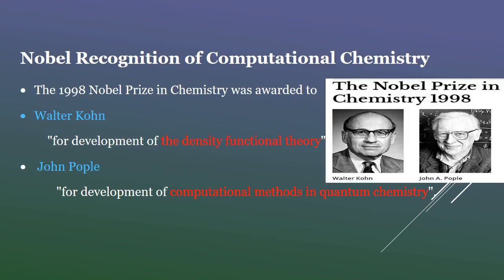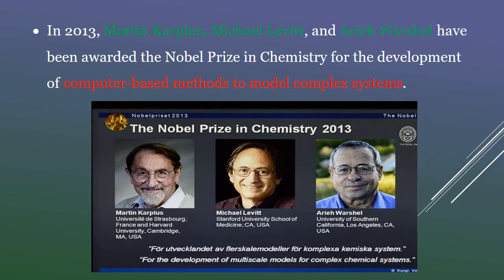The 1998 Nobel Prize in Chemistry was awarded to Walter Kohn for development of density functional theory and John Pople for development of computational methods in quantum chemistry. In 2013, Martin Karplus, Michael Levitt, and Arieh Warshel were awarded the Nobel Prize for the development of computer-based methods to model complex systems.